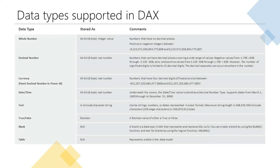There are 8 different data types in DAX. We've got whole numbers, decimal numbers, currency which is also called fixed decimal number in Power BI, date and time, text, true and false, blank, and table.